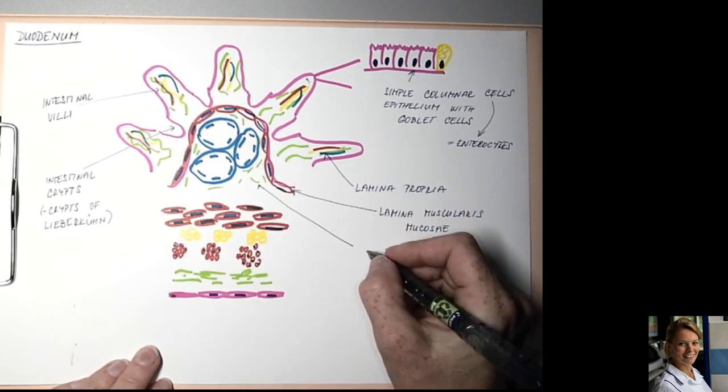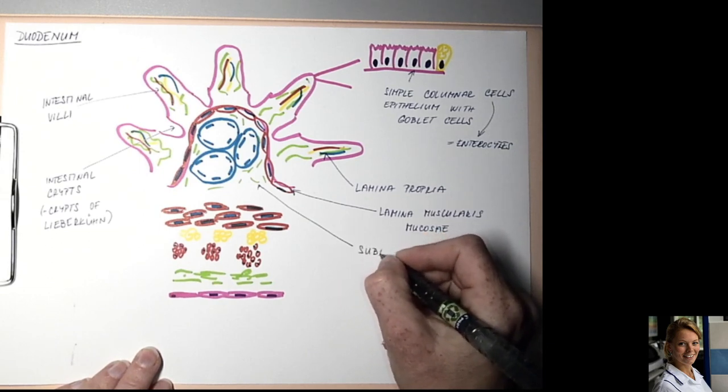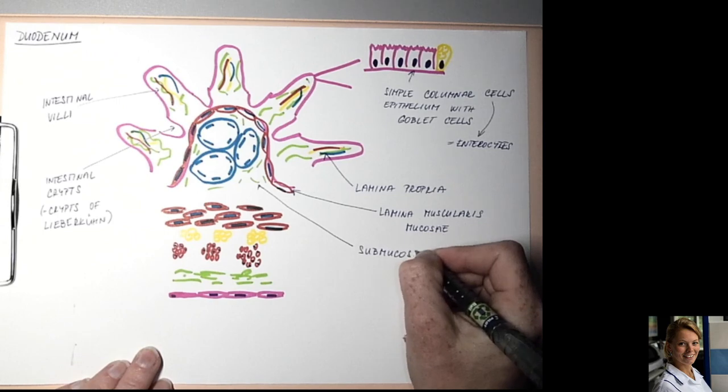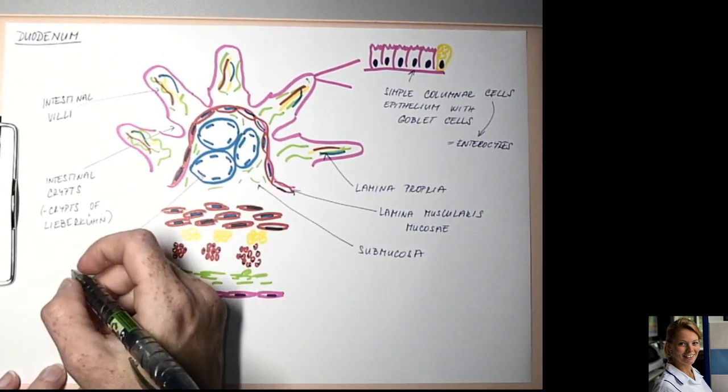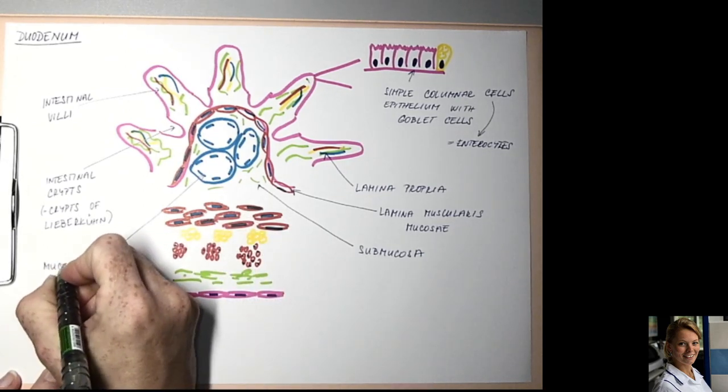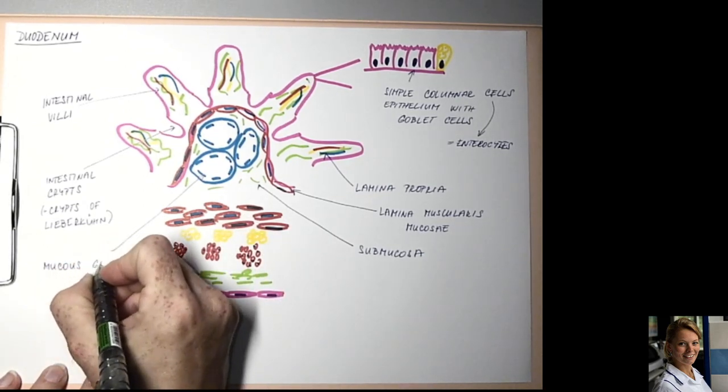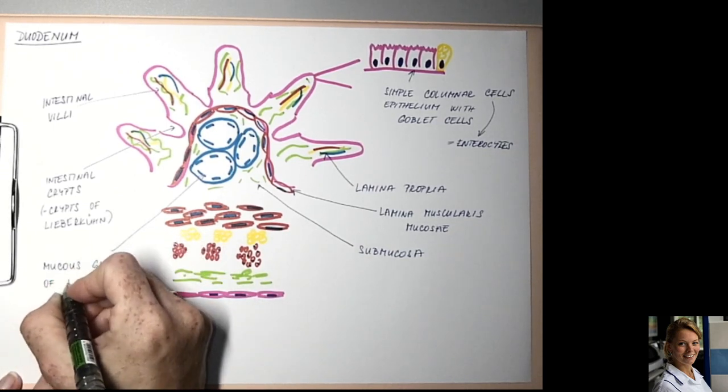Beneath the mucosa is submucosa with mucosal glands of Brunner.